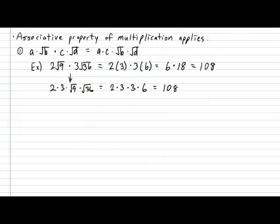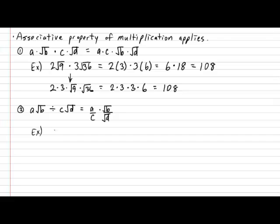The associative property can also apply to division. For example, (a × √b) ÷ (c × √d) can be rewritten as (a ÷ c) × (√b ÷ √d). Let's see a quick example: calculate (6 × √99) ÷ (4 × √36).